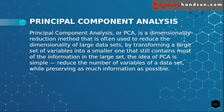Principal Component Analysis, or PCA, is a dimensionality reduction method that is often used to reduce the dimensionality of large datasets, by transforming a large set of variables into a smaller one that still contains most of the information. The idea of PCA is simple: reduce the number of variables in the dataset while preserving as much information as possible.